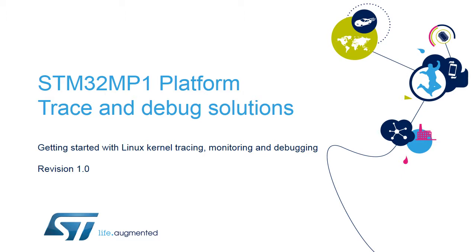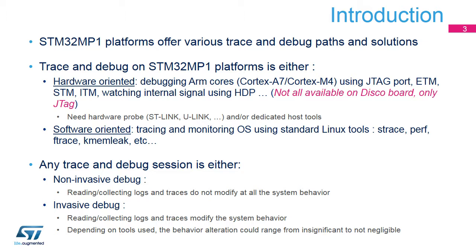STM32MP1 Software Co-Processor Management. The STM32MP1 platform offers various trace and debug paths and solutions, depending on the part to focus on. Both hardware and software interfaces are proposed on STM32MP1 platforms. The hardware path enables hardware signals for debugging ARM cores — Cortex-A7 and/or Cortex-M4 — or for watching internal signals between peripherals by using the hardware debug port.